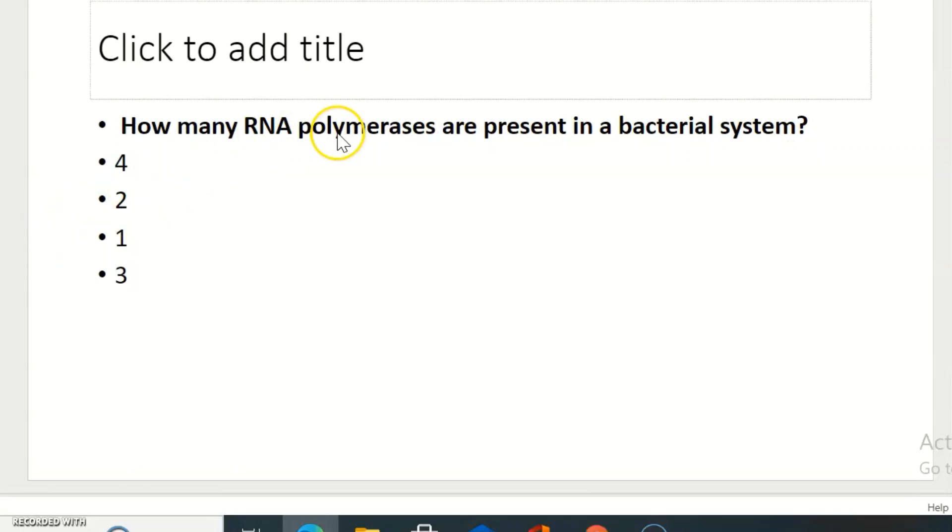How many RNA polymerases are present in a bacterial system? Bacterial system means in prokaryotes. Only one RNA polymerase is present in prokaryotes. On the other hand, in eukaryotes there are many types of RNA polymerase.